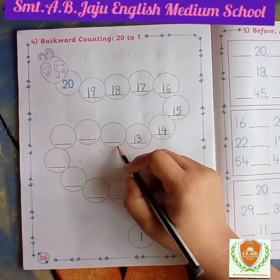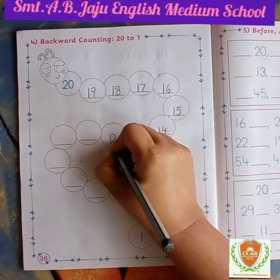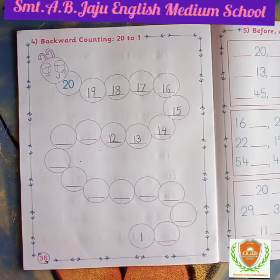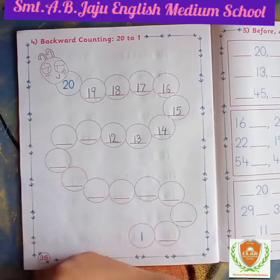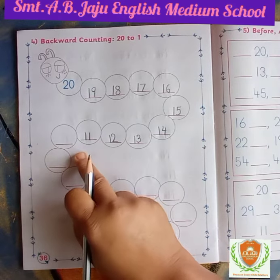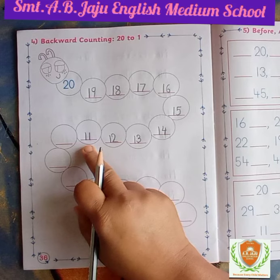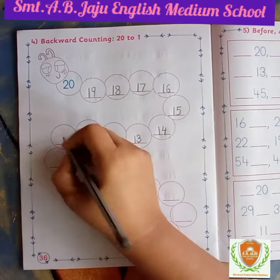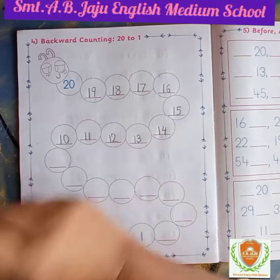After 13, which number will become? 12 — write 1 then 2. After 12, which number will become? 11 — write 1 then 1. After 11, which number will become, student? Very good! 10 — write 1 then 0.